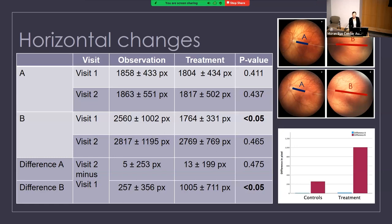It turns out vascularization seems to extend most significantly in Area B — the area from the marking line to the end of the vasculature. There is a significant difference between visit one and visit two in the observation versus treatment group, and this is depicted in the chart. The vascular growth happens primarily in Area B, and this is also where we can see a significant difference between groups.